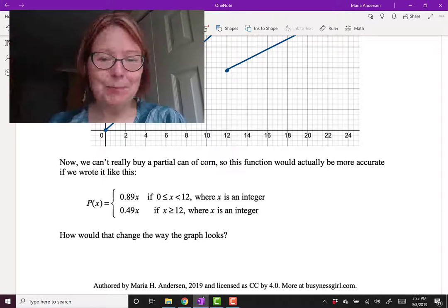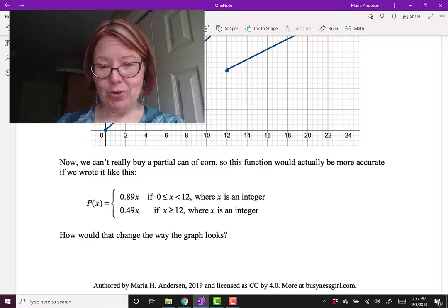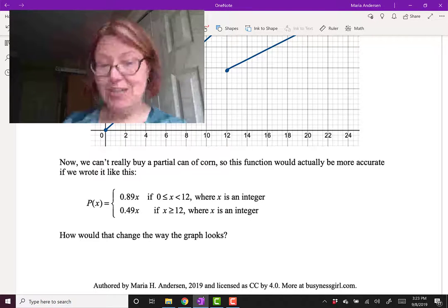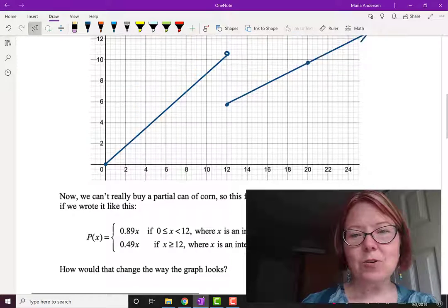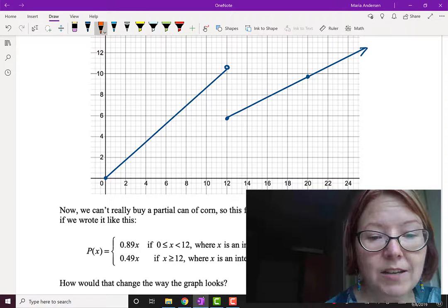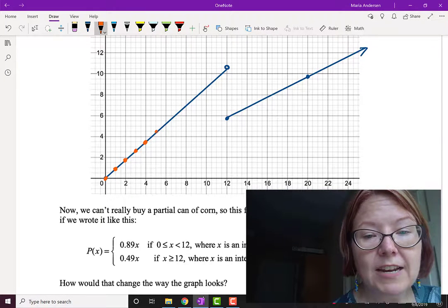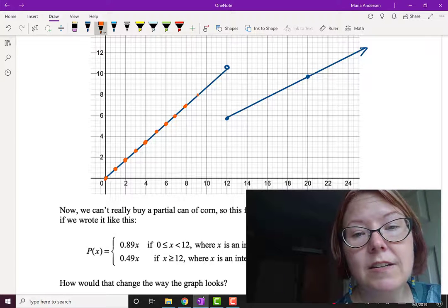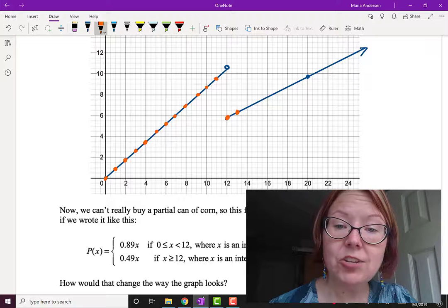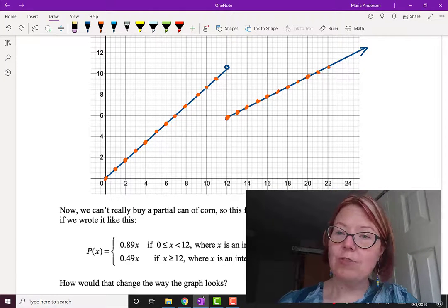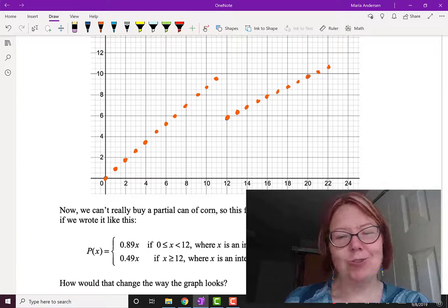Now, realistically, we can't really buy a partial can of corn. So this function would be a little bit more accurate if we wrote it as P(x) equals two segments: 0.89x if 0 is less than x is less than 12, where x is an integer. And then the second segment would be 0.49x if x is greater than or equal to 12, where x is an integer. In other words, if I was to go back to this drawing and just plot out the integer values, we have 0 comma 0, 1 comma something, 2 comma something. I'm just going to put dots on the line at every integer value going up to 11, which is the last time I would use this first price. And then I'll do the same thing on the second graph. I'll start at the x value of 12 and make an integer dot as I move up this line. And then I could go in and erase the original graphed lines, leaving myself with just the integer values. That's actually a more realistic graph of this function because we can't buy half cans or quarter cans of corn.